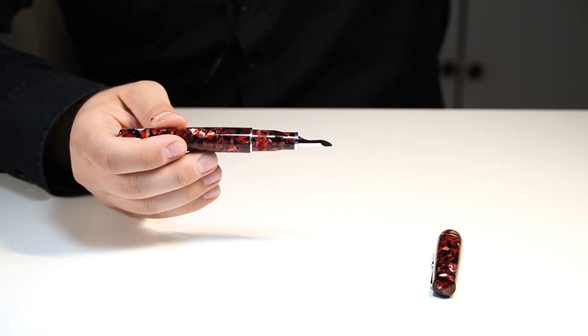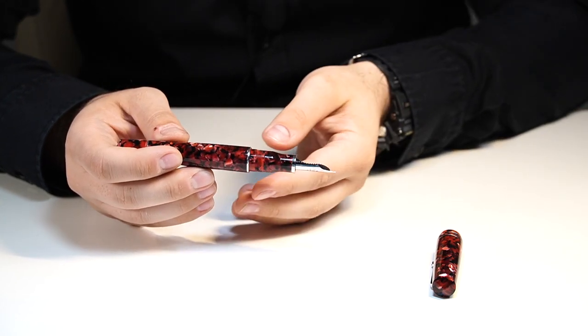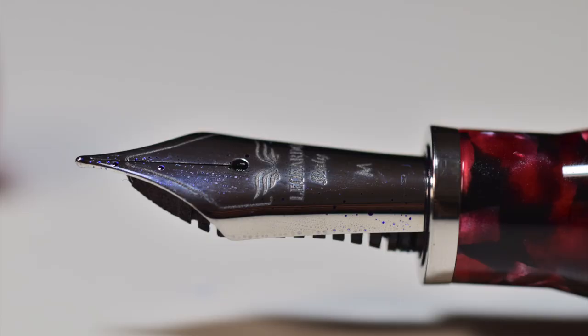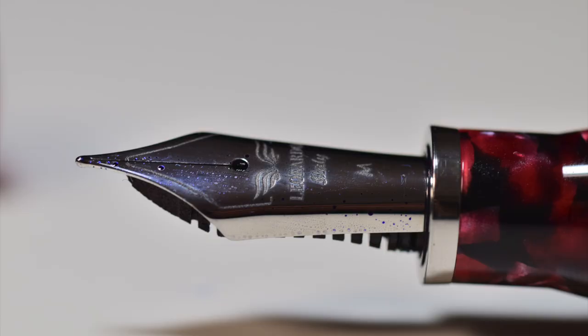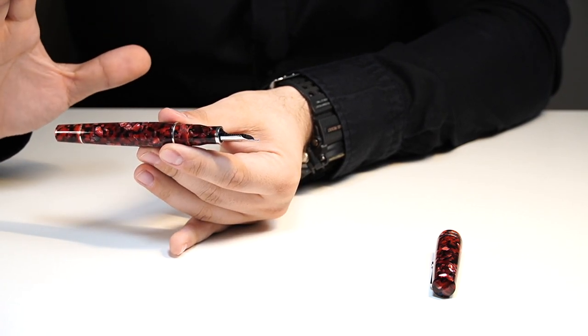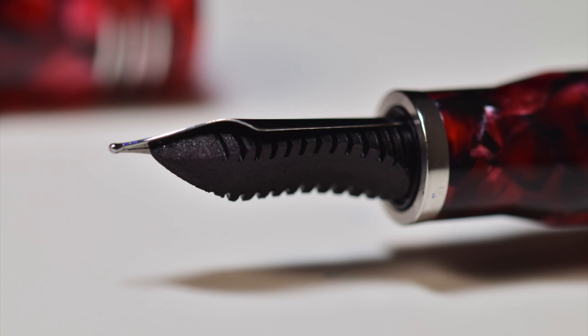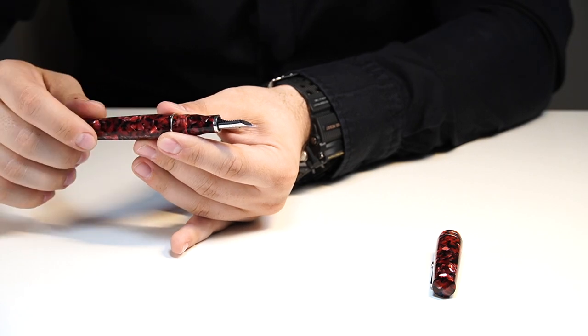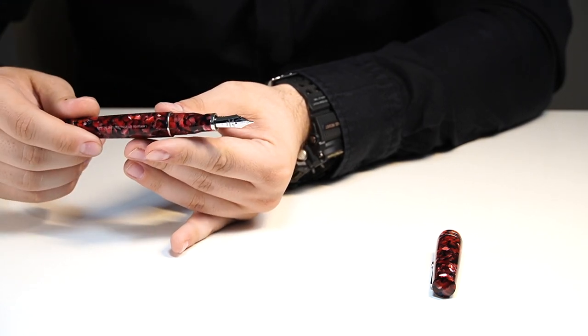And when we uncap the pen, we are going to find the nib. As I told you, it is offered in two materials, steel and 14 karat gold. We have the same ebonite feed, which is manufactured inside the Leonardo Officina Italiana factory. This is cut by hand on a machine by the guys there.